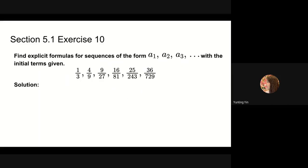Find explicit formulas for the sequence with the initial terms given. The sequence begins with 1/3, 4/9, and 9/27. By observing the initial terms, we can see that all numerators are square numbers: 1 is 1 squared, 4 is 2 squared, 9 is 3 squared, so the numerator should have the form n squared.